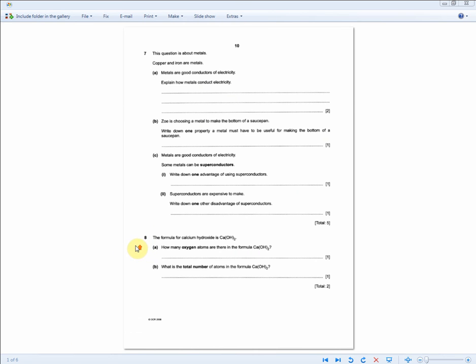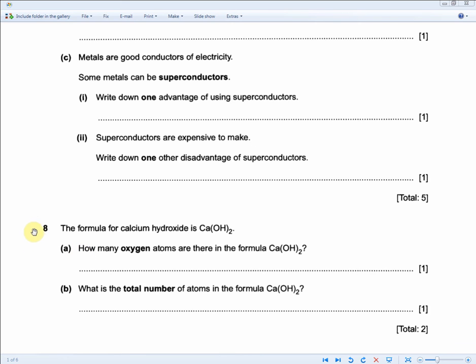These questions are nice, easy one mark ones. If we zoom in, you'll see why. It reads, the formula for calcium hydroxide is Ca(OH)2. How many oxygen atoms are there in the formula Ca(OH)2? For one mark, you should know that everything inside the brackets is times two and everything outside the brackets is times one. So there's one calcium, two oxygen and two hydrogen atoms. The answer is two oxygen atoms and that will get you the one mark.